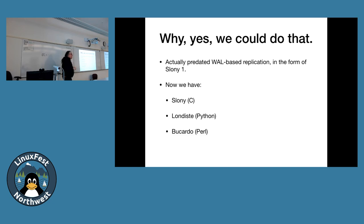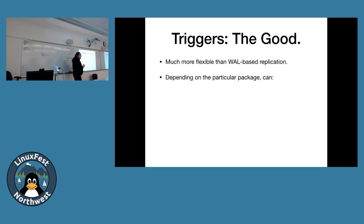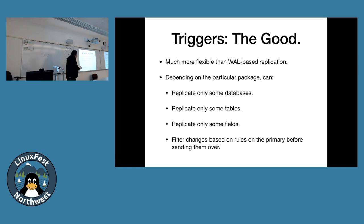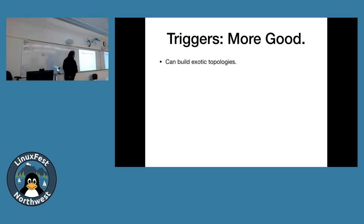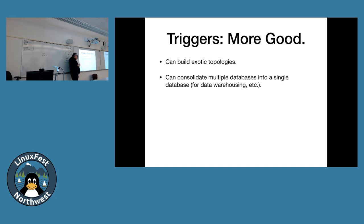Trigger-based replication is much more flexible than WAL-based replication. Depending on which package you pick, you can replicate only some databases, only some tables, only some fields — you don't have to replicate everything. You can filter changes based on rules on the primary before sending them, like 'only push changes that pass this predicate.' You can build really exotic topologies, merge things together, consolidate databases from multiple servers into a single one for data warehousing. Bucardo supports multi-master where two tables with identical schemas on different machines can replicate to each other.